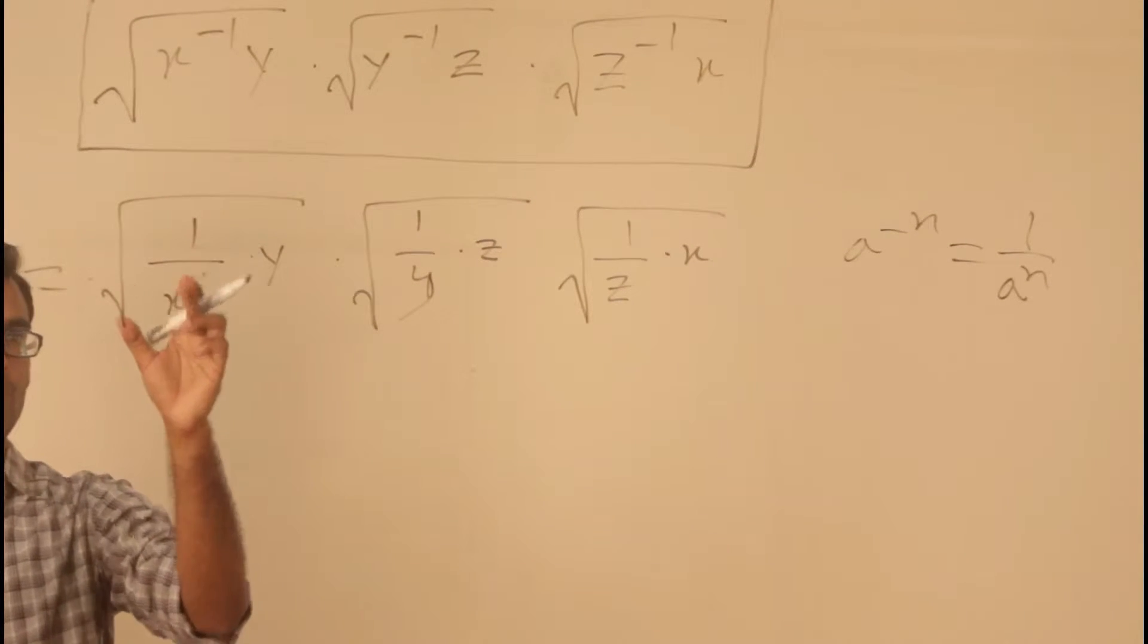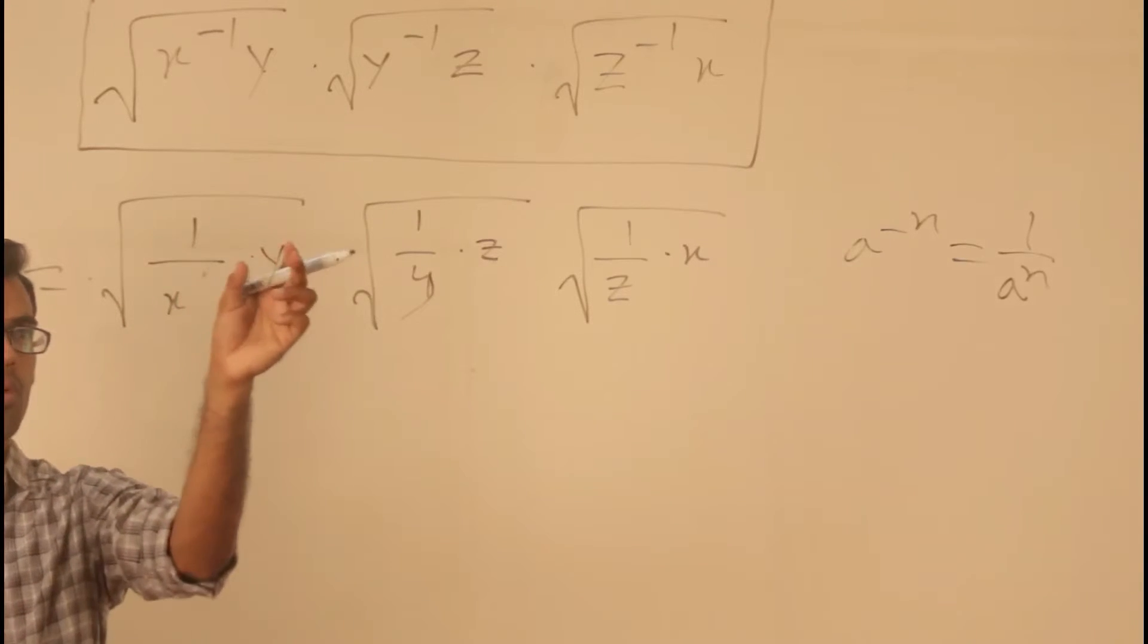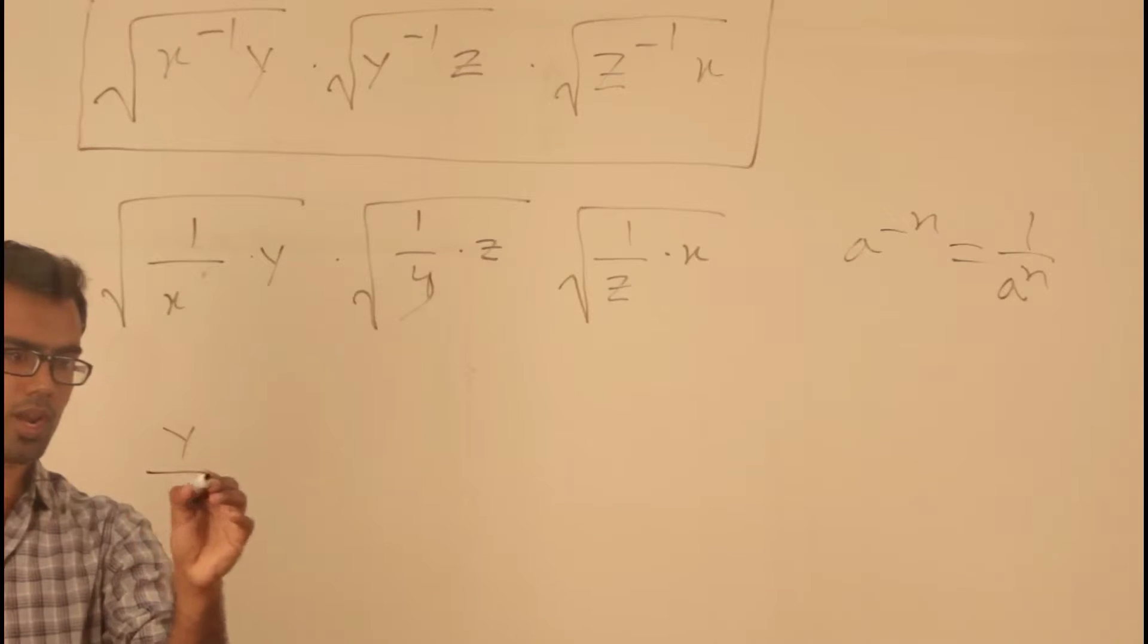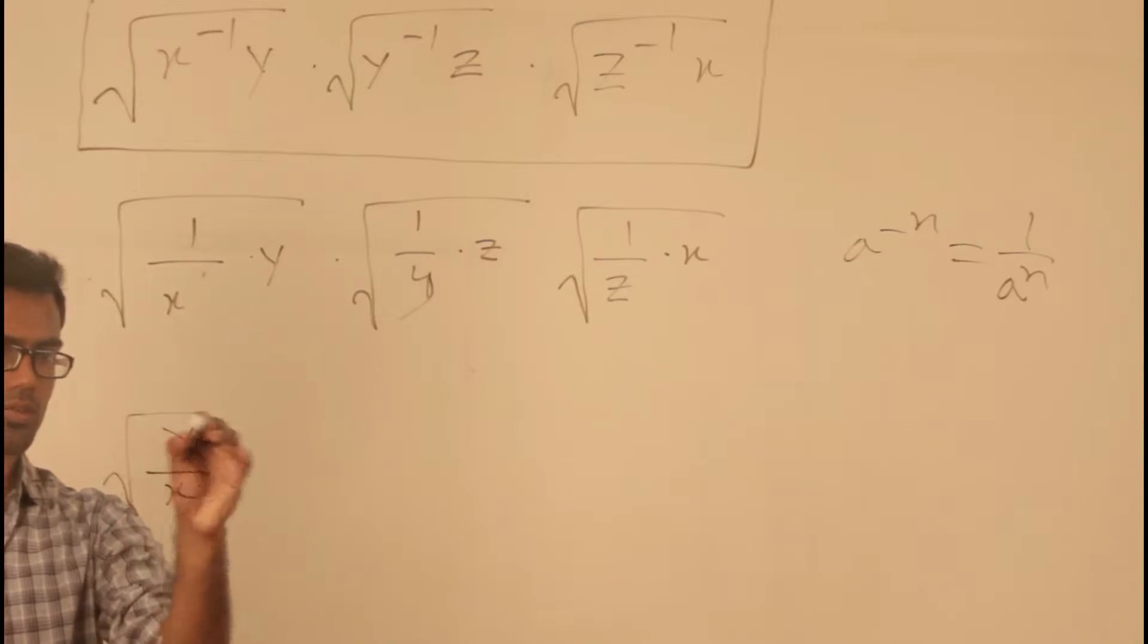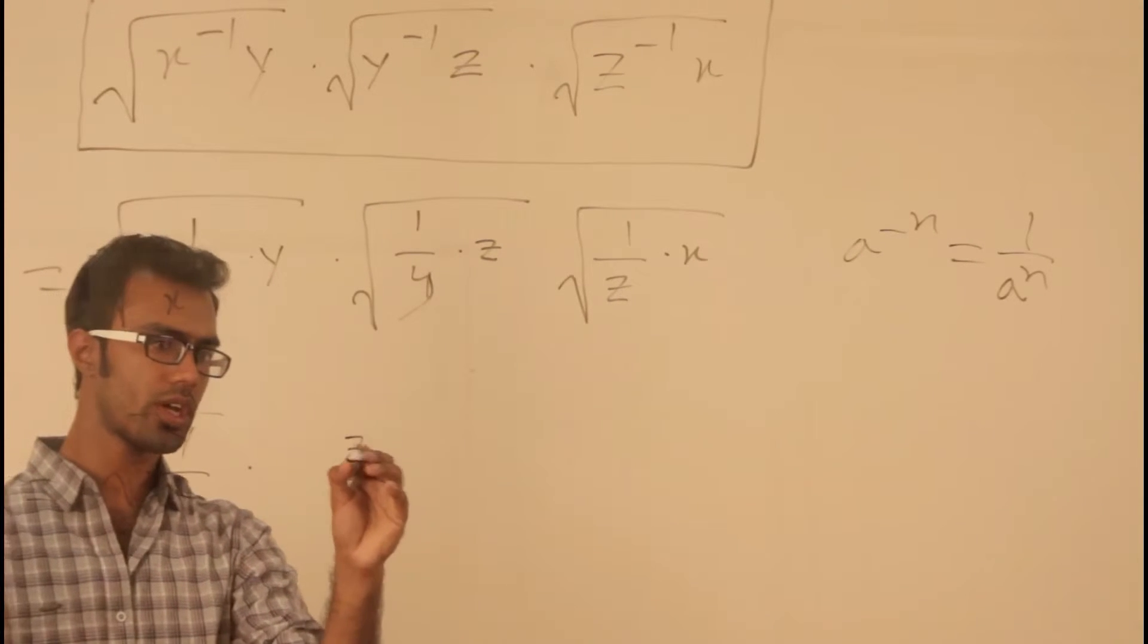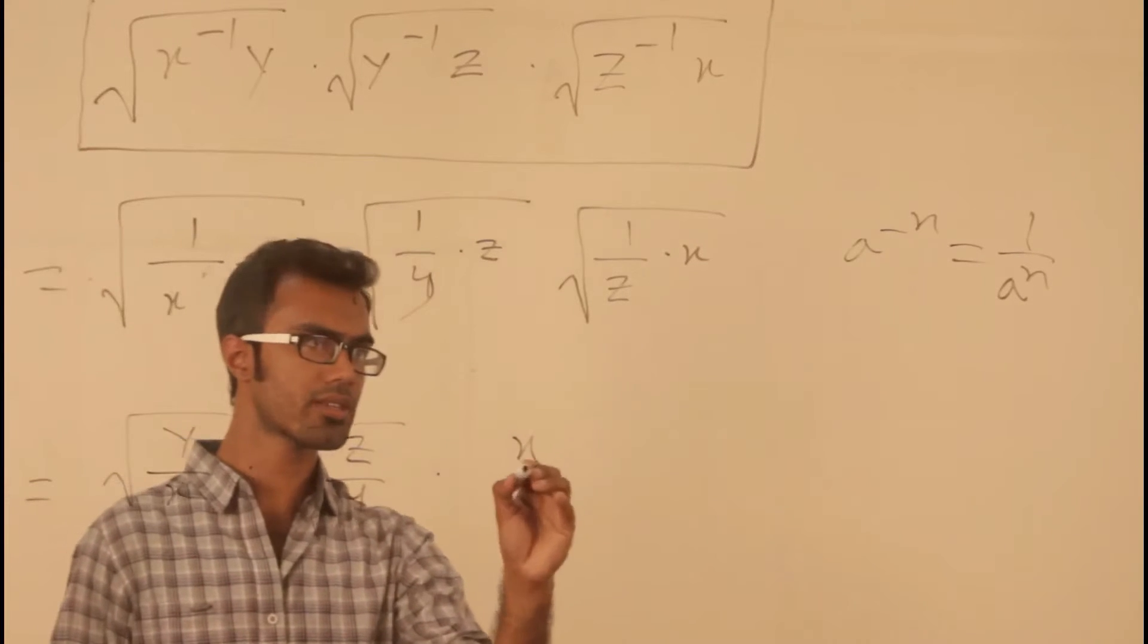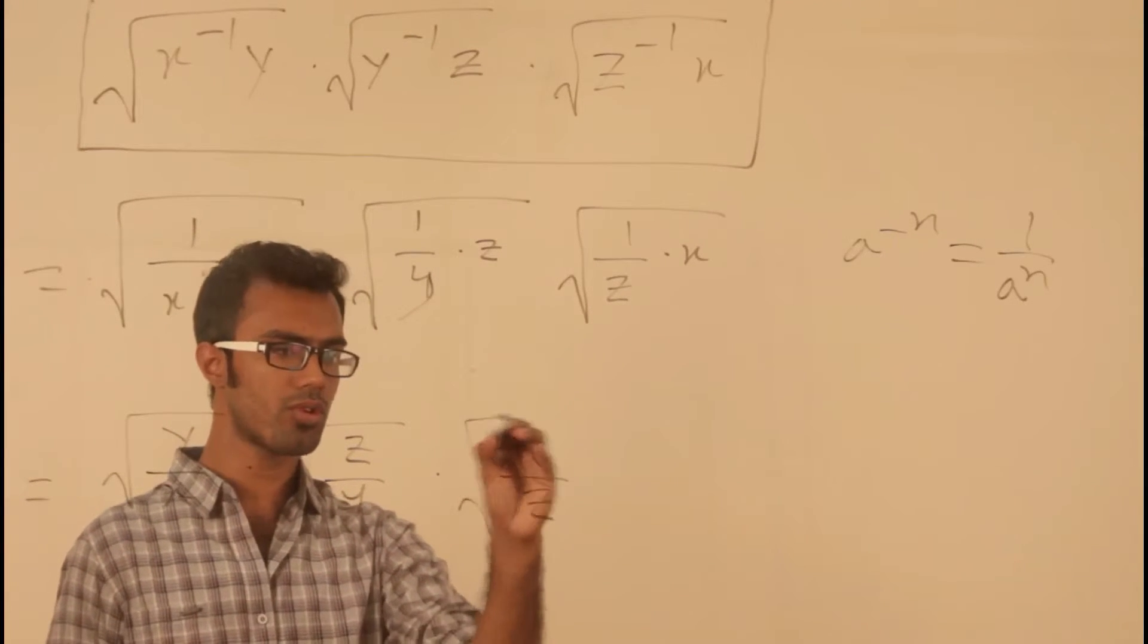Now we see, 1 divided by x into y. If we multiply by y, we get y divided by x root over, into z divided by y root over, into x divided by z root over.